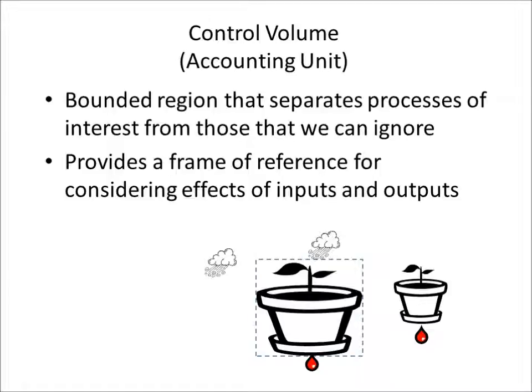Our control volume in this case separates the world we care about — anything coming into or leaving the flower pot — from random inputs like the cloud off to the left that isn't affecting our pot, and random outputs from another flower pot that isn't part of our system. The control volume surrounds our one pot and gives us a frame of reference for carrying out this accounting of volumes.